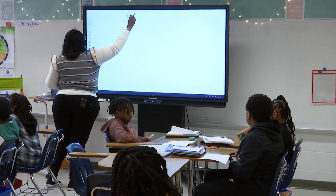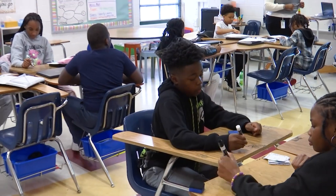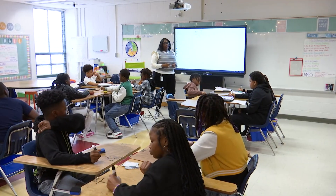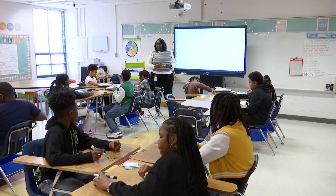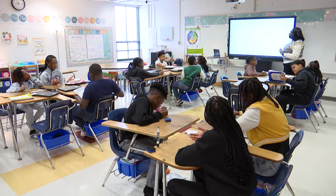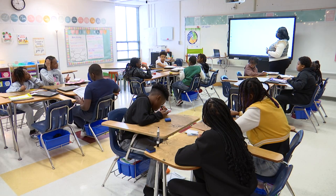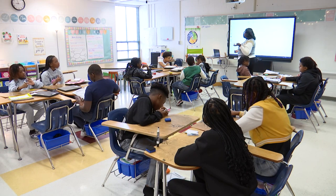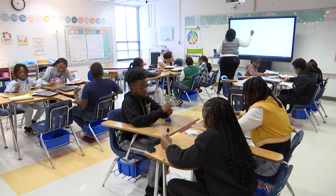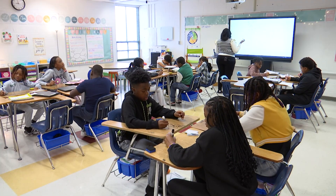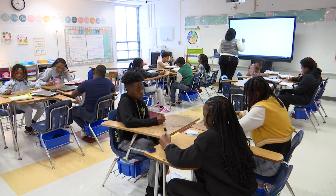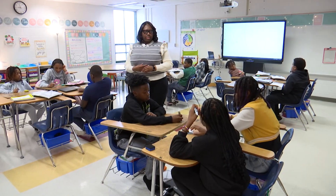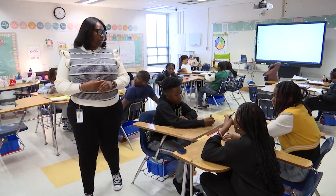Prime and composite — give me a number. Fifty-seven. Everyone write fifty-seven on their desk. What do we need to make? A factor tree. How do I break it down? One times fifty-seven. Can fifty-seven be broken down anymore? No. So your prime factorization is just one times fifty-seven. Is it prime or composite? Prime.